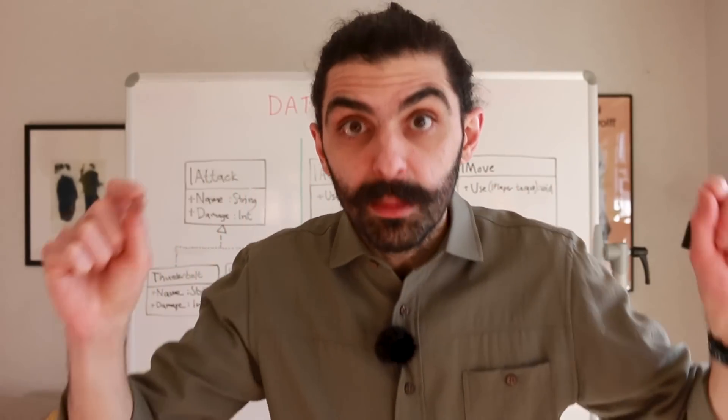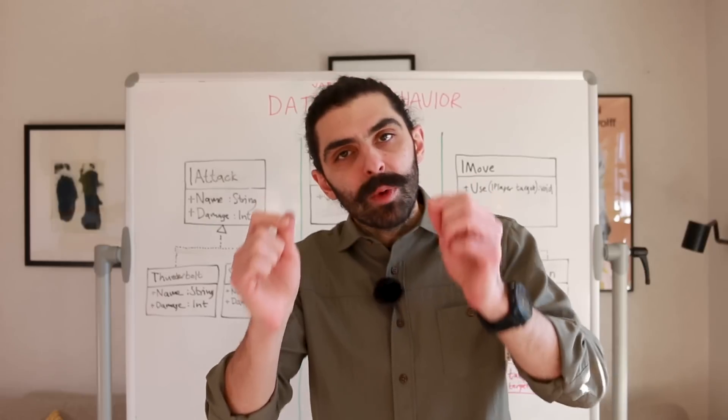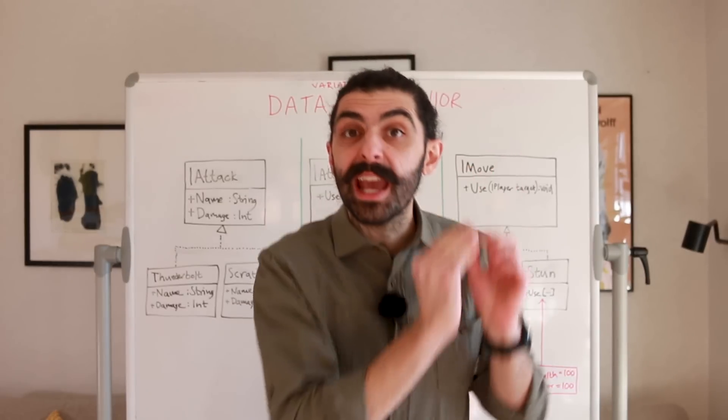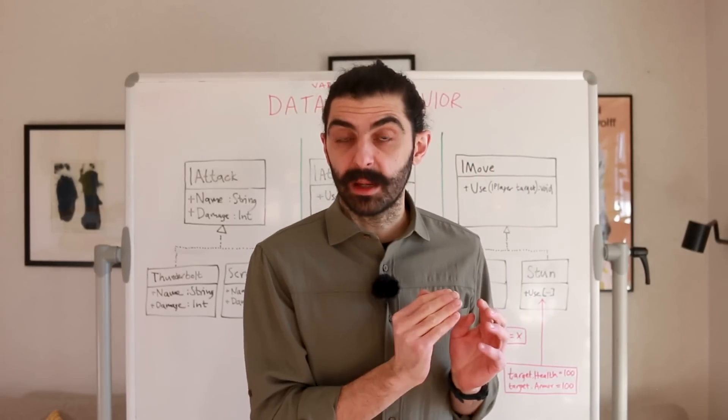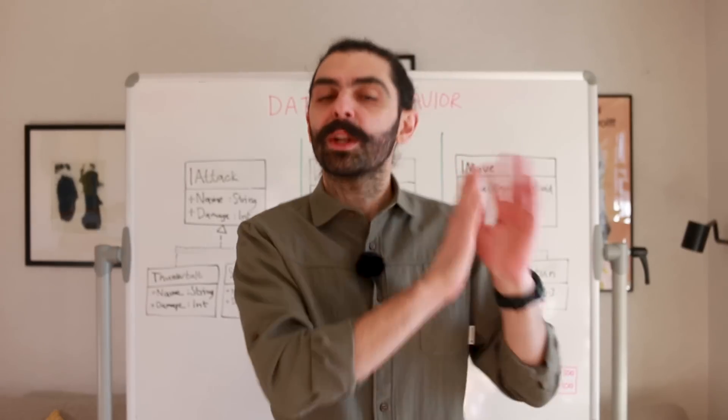Using subtype polymorphism to make the code worse. The only time when you should use subtype polymorphism is when you have variations in behavior in the subtypes — not when you have variations in data, but when you have variations in behavior.